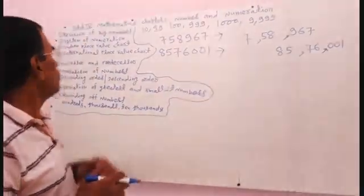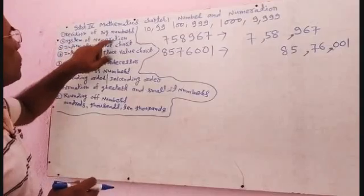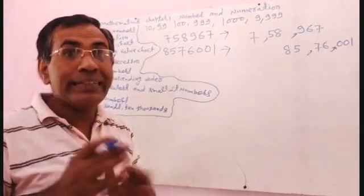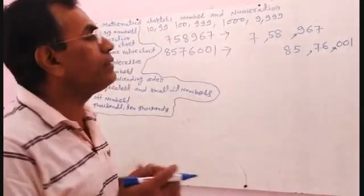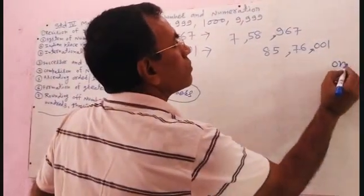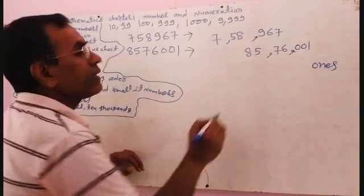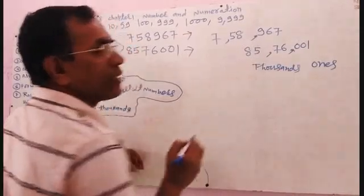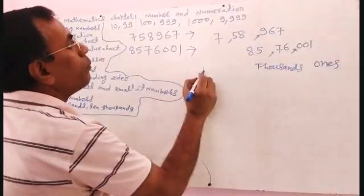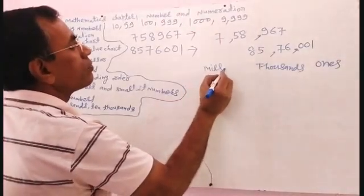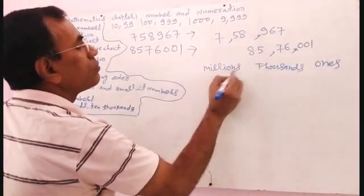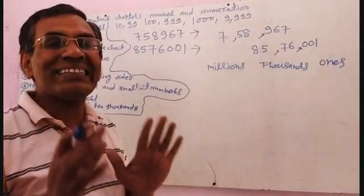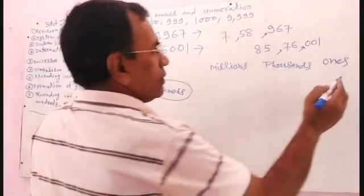Now I am going to explain the system of numeration according to the international place value chart. In the international place value chart, the first period is ones, the second period is thousands, and the third period is millions. In all periods, you can arrange three digits each.